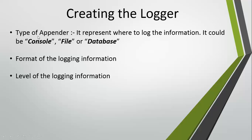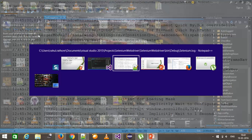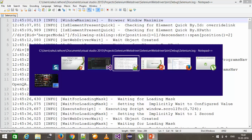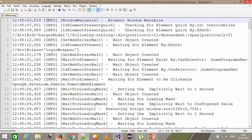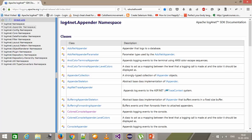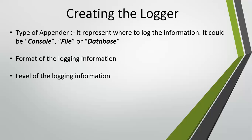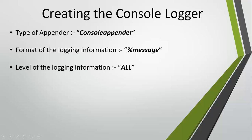Now, for the type of appender — all this information can easily be found in the online SDK provided by log4net. This is the SDK reference for the appender. I'm going to create a console appender, meaning the log will be output to the console. The format of logging information will use percent message, which displays the message your logger is generating. Currently I'm setting the level of logging information to All.